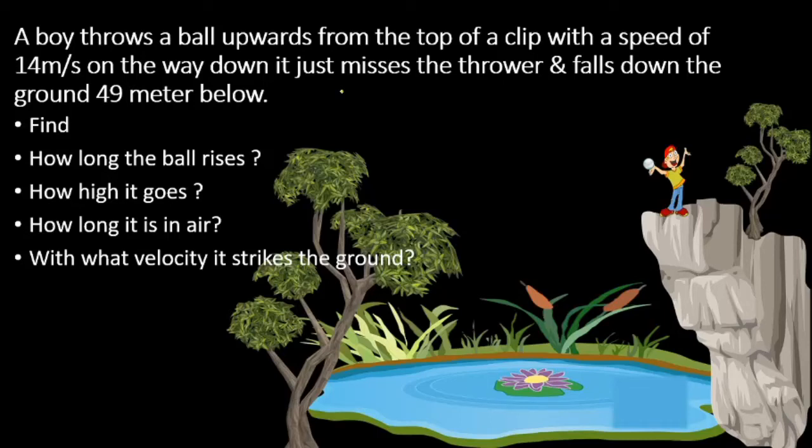A boy throws a ball upward from the top of a cliff with a speed of 14 meters per second. On the way down, it just misses the thrower and falls to the ground 49 meters below.